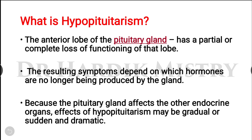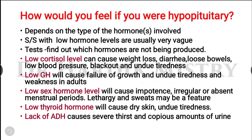Hypopituitarism is when the anterior lobe of the pituitary gland has a partial or complete loss of function. The symptoms depend on the type of hormone no longer being produced. Because the pituitary gland affects other endocrine organs, the effects of hypopituitarism may be gradual or sudden and dramatic.